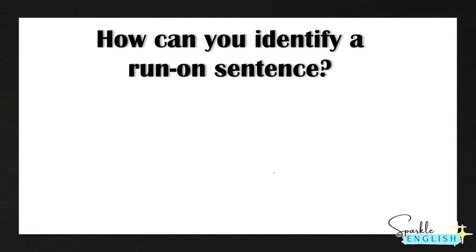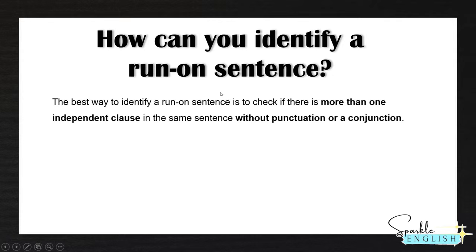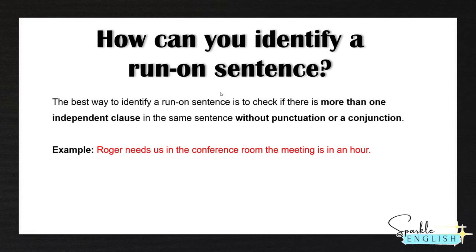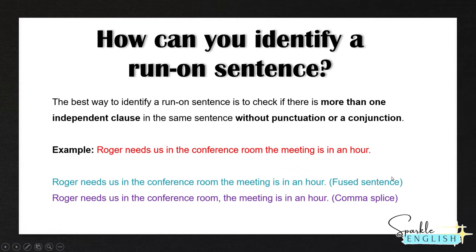But first, how can you identify a run-on sentence? The best way to identify a run-on sentence is to check if there is more than one independent clause in the same sentence without punctuation or a conjunction. For example: 'Roger needs us in the conference room, the meeting is in an hour.' Without any punctuation this would be a fused sentence, and with a comma it would be a comma splice. Both of these are incorrect.